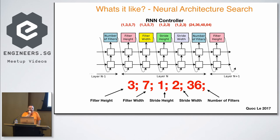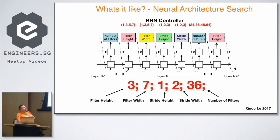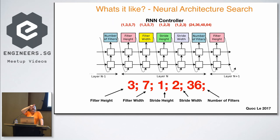The way NASNet worked was it had an RNN controller that would predict certain parts, which became a config file — specifying things like number of filters, filter height, filter width, and stride for each CNN layer. It would build the model, train it, check the accuracy score, and use reinforcement learning as a reward back into the RNN. The key concept: you can take an RNN and use it to make a config file.